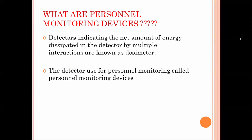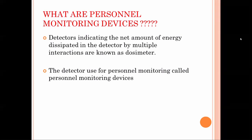There are two kinds of detectors used for personal monitoring devices: active detectors and passive detectors. The thermoluminescence dosimeter (TLD) comes under the passive detector category. Passive detectors indicate the net amount of energy dissipated in the detector by multiple interactions. These contain semiconductor devices which impart energy and store it for long duration.